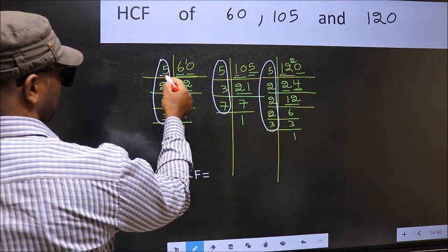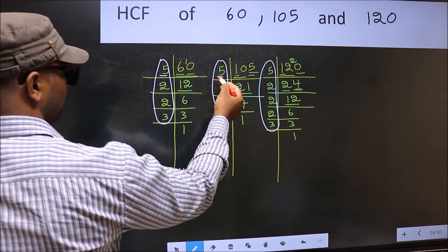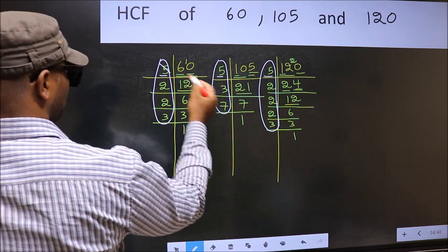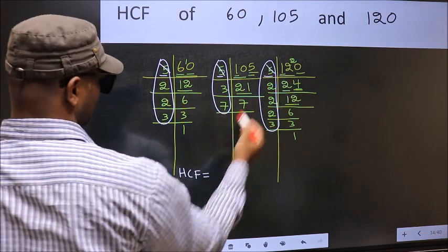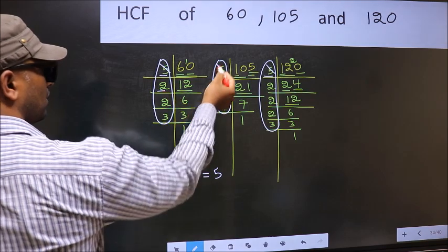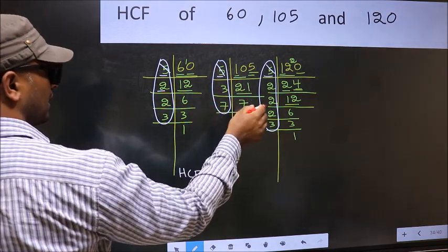Starting with the number 5. Do we have 5 here? Yes. Go to the next place. Do we have 5 here? Yes. So cut 5 right here. Next number 2. Do we have 2 here? No. So no need to check in the other place.